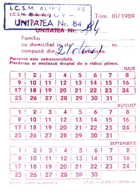Rationing is the controlled distribution of scarce resources, goods, or services, or an artificial restriction of demand. Rationing controls the size of the ration, which is one's allowed portion of the resources being distributed on a particular day or at a particular time.